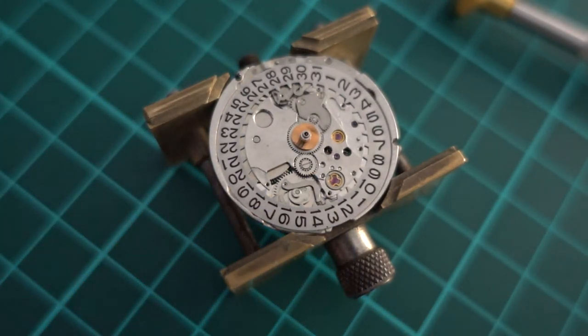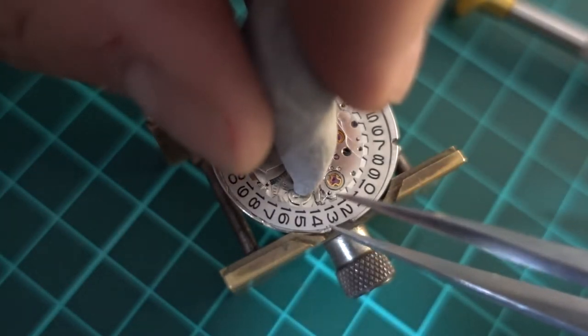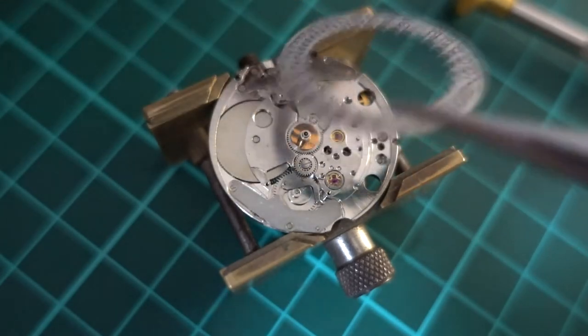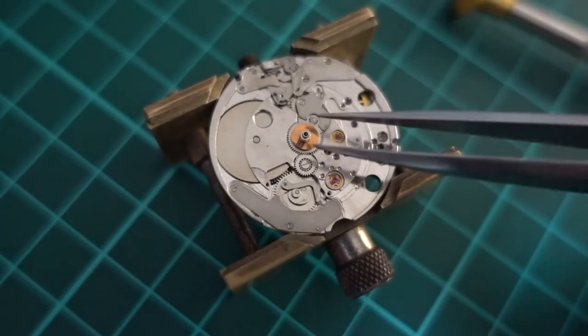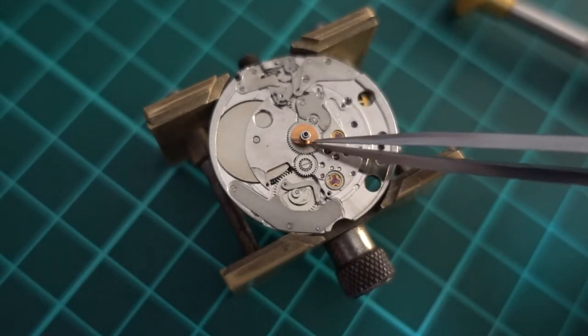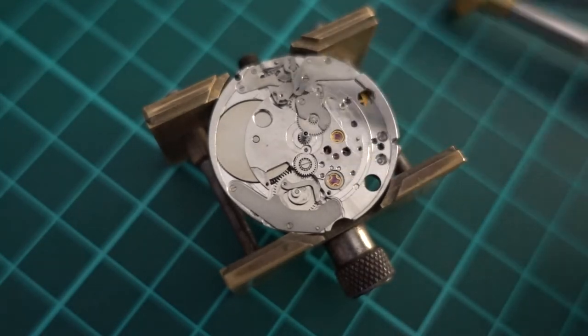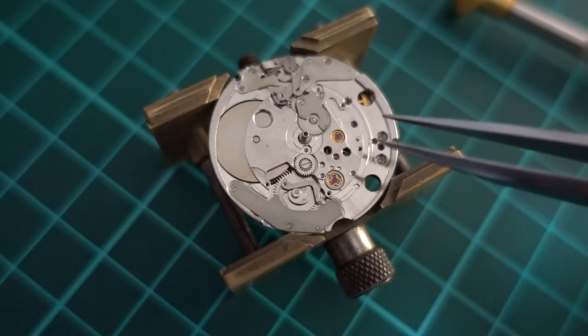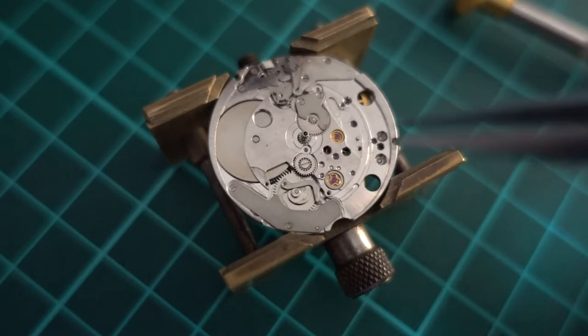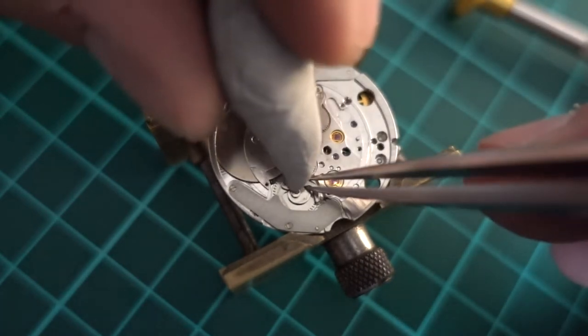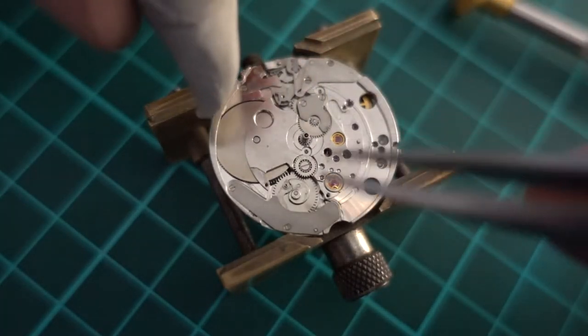We're just having a look at the date wheel there. You'll see it uses a cam system to flip the date around. If you get that right when you're setting it up, basically what it will do is pressure will build up on a little spring that we'll see in a sec, which is loaded by the cam which is on the top of the wheel. When it gets to midnight the little lever there will flick from the spring pressure and it will turn the calendar wheel around.